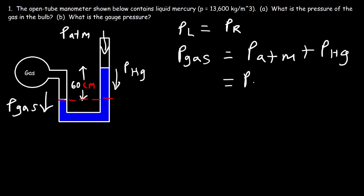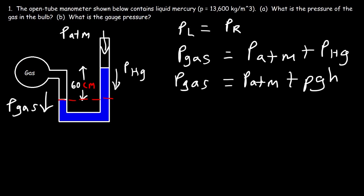The pressure of a fluid, or the pressure due to the weight of a fluid, is always equal to the density of the fluid times the gravitational acceleration times the height of the fluid. That's going to help us calculate the pressure of the gas in the bulb.